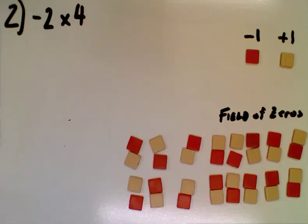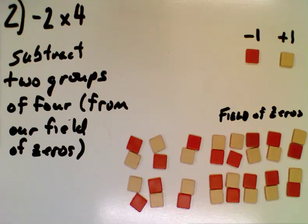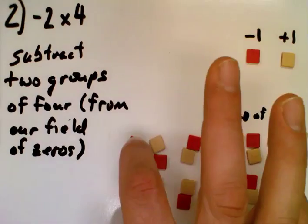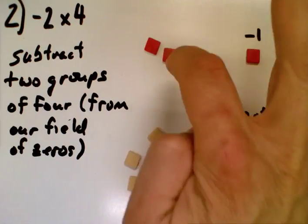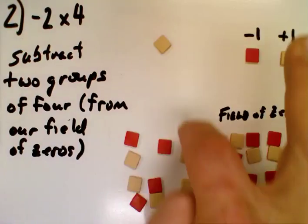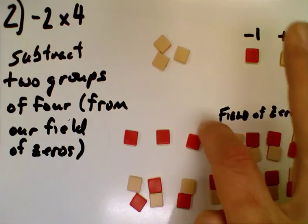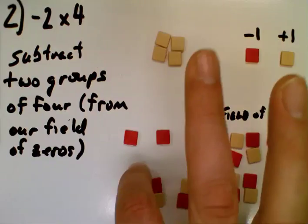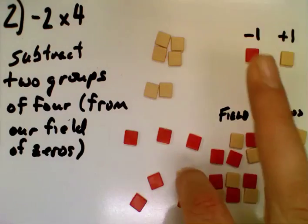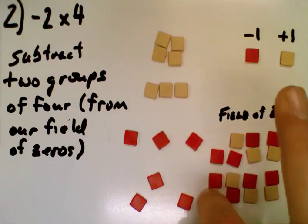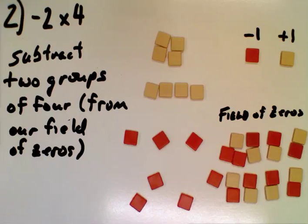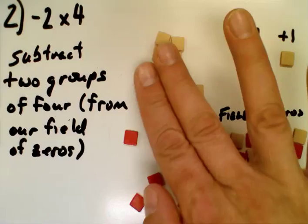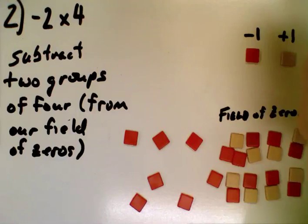So what you might say is negative 2 groups of 4, but that doesn't quite make sense. So what we're going to say instead is subtract 2 groups of 4 from our field of zeros. So here's one group of, sorry, that's negative, so two groups of positive 4. There's one group of positive 4, and then here's a second group of positive 4. We've taken those out of our field of zeros, and we've actually subtracted them. So we're literally getting rid of them.